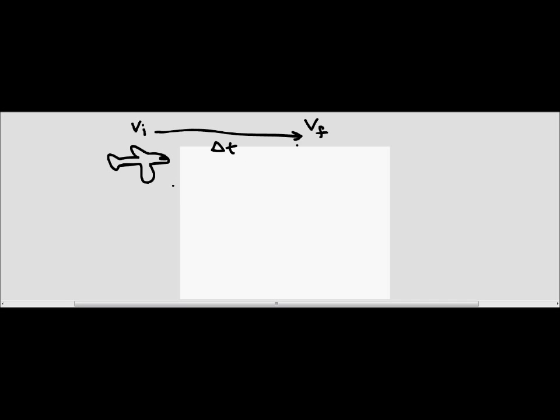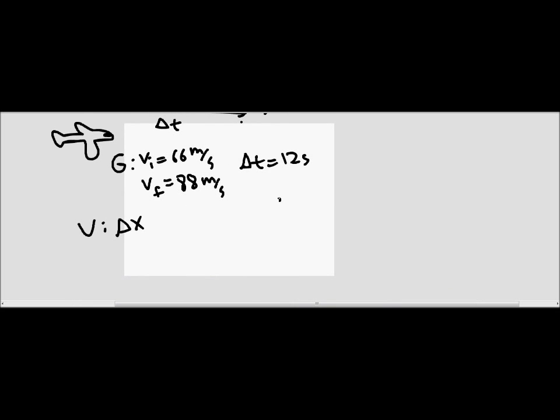So, to go into the GUESS method, we have our givens, which are the initial velocity is 66 meters per second, the final velocity is 88 meters per second, and the change in time is 12 seconds. The unknown for this problem is its change in x, or the distance that it travels, as it's going at these two different speeds. Now, when we get into the equation part of this problem, on the actual problem, it says that there are three different methods that you can use to solve this problem. We're only going to cover two of them, because the third method is actually going back to the stuff from the previous unit, and we don't need to go into that.